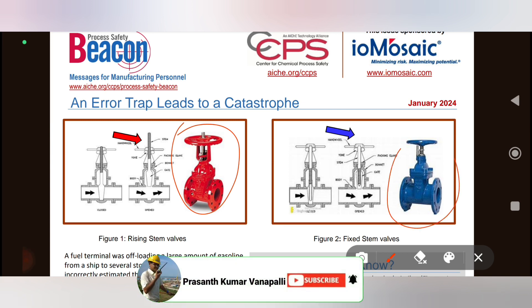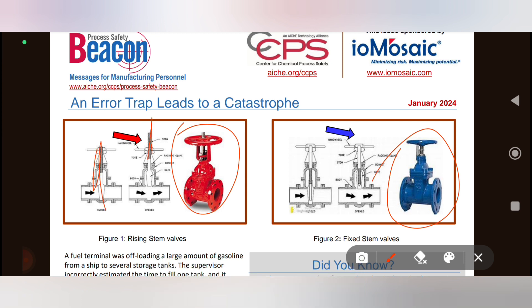And blue valve is non-rising stem gate valve. If it is closed, the stem is not rising. So, blue valve when closed, open, and closed, the stem doesn't rise. So, what is the scenario here?